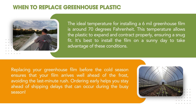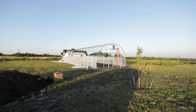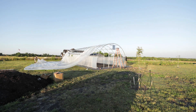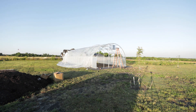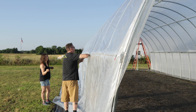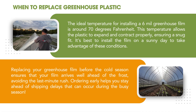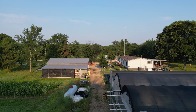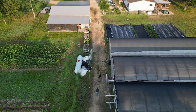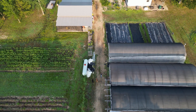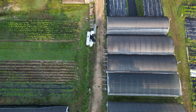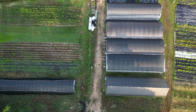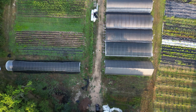When is a good time to replace the greenhouse plastic? Ideal temperatures for installing six-mil greenhouse film is around 70 degrees Fahrenheit — this temperature allows the plastic to expand and contract properly, ensuring a snug fit. It's best to install the film on a sunny day to take advantage of these conditions. Replacing your greenhouse film before the cold season ensures that your film arrives well ahead of the frost, avoiding the last-minute rush. Ordering early helps you stay ahead of shipping delays during the busy season. We're filming this in September 2024 — winter is around the corner for a lot of you. If your plastic is at the end of that six- to nine-year lifespan, let's go ahead and do it while you're not freezing to death and before the winds pick up. Fall is a great time to put up greenhouse plastic if you're replacing or even building a new one.